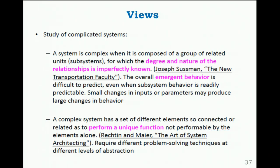The emerging behavior: a complex system has a set of different elements connected or related in a way that they can perform a function which is not performable by the elements alone. If you take the elements of a complex system in isolation, they will not be able to do what they do as an ensemble. This also points to something very important for complex systems, which I won't touch too much in this course — the multi-scale situation. To define a system as complex is very much dependent on the scale.